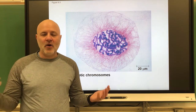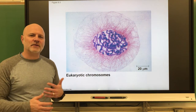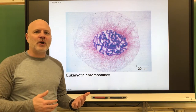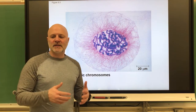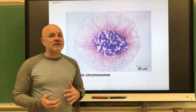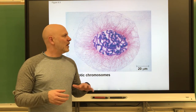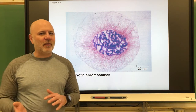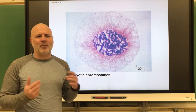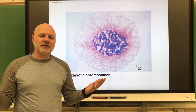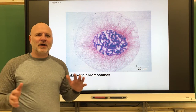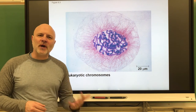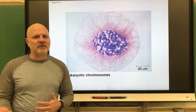Those numbers — 46 for humans, 38 for cats, and 78 for chickens — are what we call the diploid number. The diploid number is a cell condition in which there are two sets of chromosomes. Cells that have the diploid number are called somatic cells, which are typical body cells like a skin cell, a brain cell, or a muscle cell. These two sets come from your parents: one set from your mom and one set from your dad.